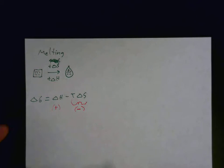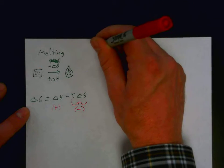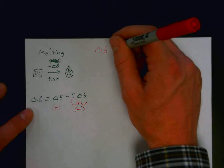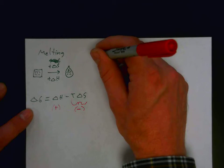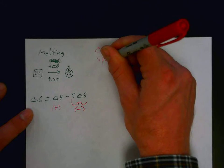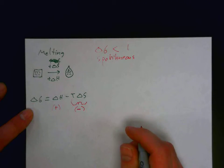Now, we know that the process is spontaneous if delta G is negative. So, if delta G is less than zero, that's spontaneous.